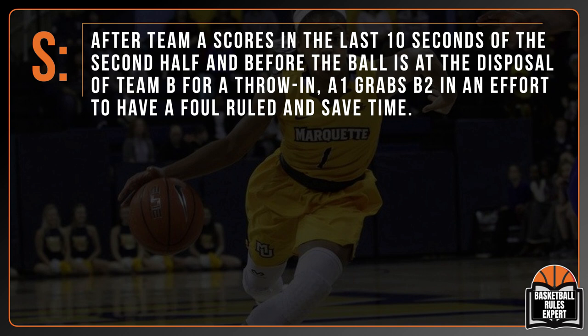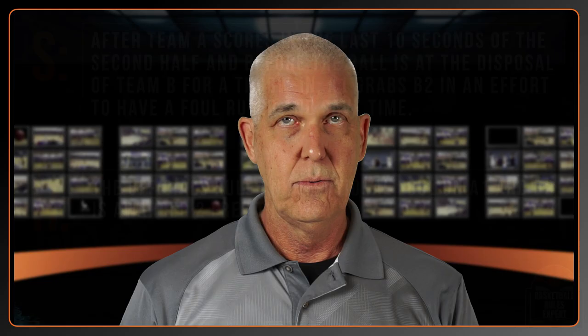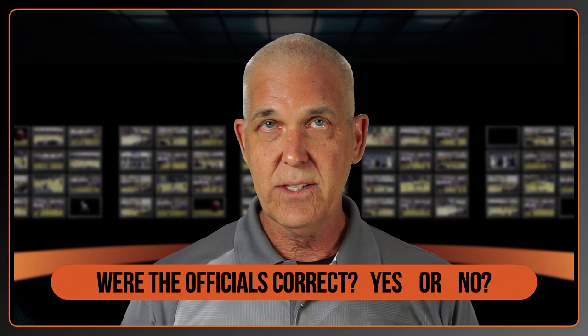After Team A scores in the last 10 seconds of the second half, and before the ball is at the disposal of Team B for a throw-in, A1 grabs B1 in an effort to have a foul ruled and stop the clock. The officials rule an intentional foul on A1, and B2 is awarded two free throws. Were the officials correct, yes or no? The team is obviously trailing, we're in the final seconds. The ball goes in the basket. Before the ball is at the disposal of the thrower, a player intentionally fouls in an effort to stop the clock. The officials rule an intentional foul and award two free throws to the offended player and the ball at the spot nearest the foul.